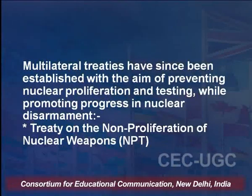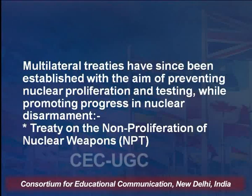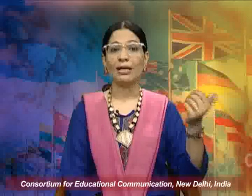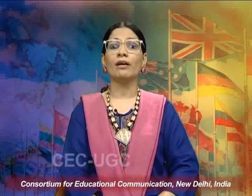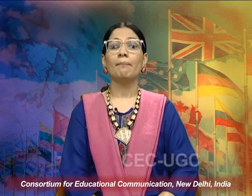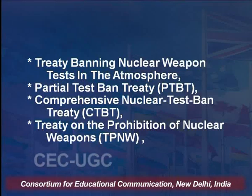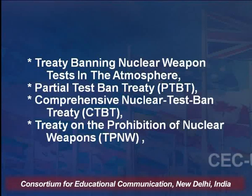Multilateral treaties have since been established with the aim of preventing nuclear proliferation and testing, and promoting progress on nuclear disarmament. These include: the Treaty on Non-Proliferation of Nuclear Weapons, the Treaty Banning Nuclear Weapons Tests in the Atmosphere — the Partial Test Ban Treaty — the Comprehensive Nuclear Test Ban Treaty, and the Treaty on the Prohibition of Nuclear Weapons.